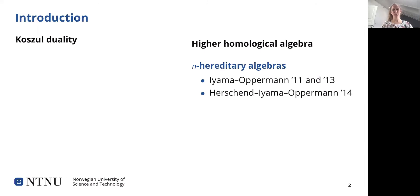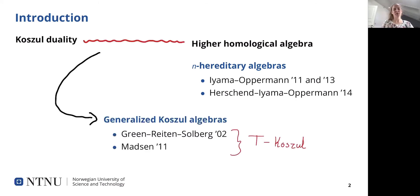In this work, we give a connection between two different areas in representation theory, namely Gazool duality on one side and higher homological algebra on the other side. In particular, this notion of n-hereditary algebras is very important to us. We establish this connection through a generalized or higher notion of Gazool algebras. This generalization builds on work by Green, Reitner, Solberg, and also Dag-Oskar Matsen, where they formulate what it means to be a Gazool algebra with respect to a tilting module T, calling their generalized Gazool algebras T-Cazool algebras. We give a higher version of this definition, and this turns out to relate very well to the n-hereditary algebras.